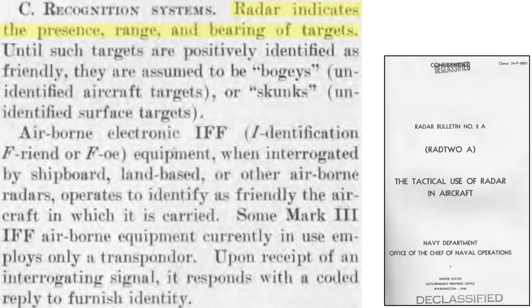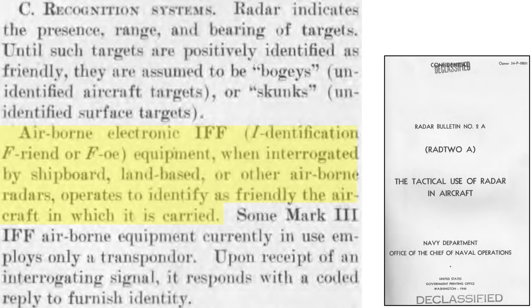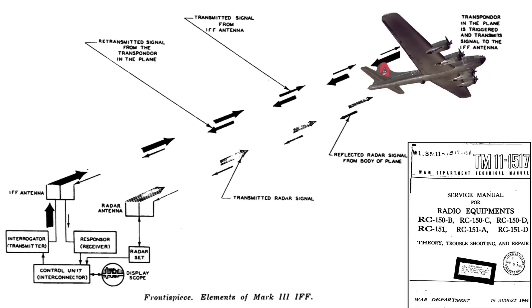Radar provides the contact's range and bearing. Aircraft radar returns are listed as bogeys until they can be classified as friendly or enemy, or skunks if it's a surface contact. The electronic IFF system will aid in identifying the contact as a friendly. This schematic provides a description of how the IFF system works, from a 1944 War Department Technical Manual.